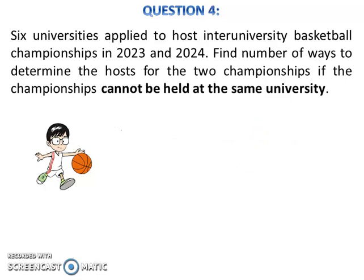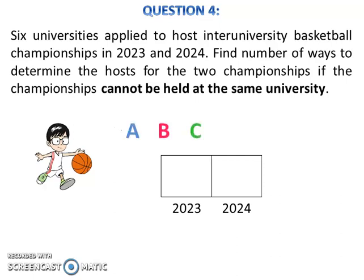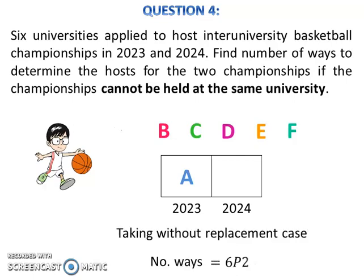Let's look at question 4. Six universities applied to host the Inter-University Basketball Championships in 2023 and 2024. Find the number of ways to determine the host if the championships cannot be held at the same university. Draw 2 slots — one for 2023 and one for 2024. The universities are A, B, C, D, E, and F. Since the same university cannot host both years, this is a taking-without-replacement case, so the number of ways to determine the host is 6P2.